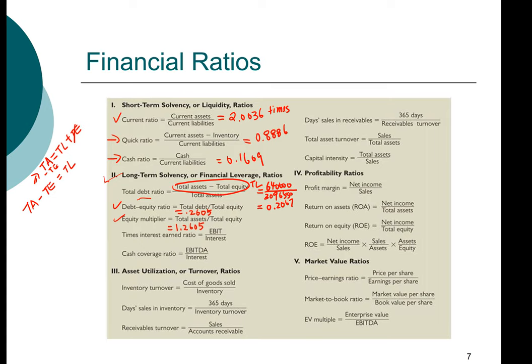Hello, welcome back. I hope you get 0.2605 for the debt to equity ratio and 1.2605 for equity multiplier. If you do not get these two numbers, please pause the video. Go to the slide that shows the more detailed calculation to make sure that you understand what mistakes you may have made.